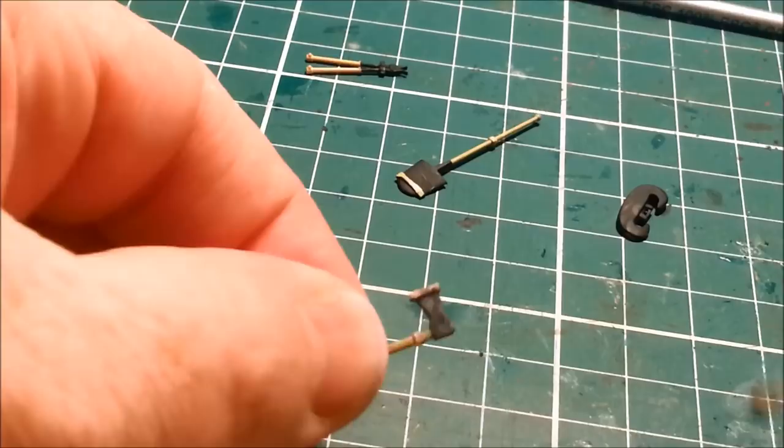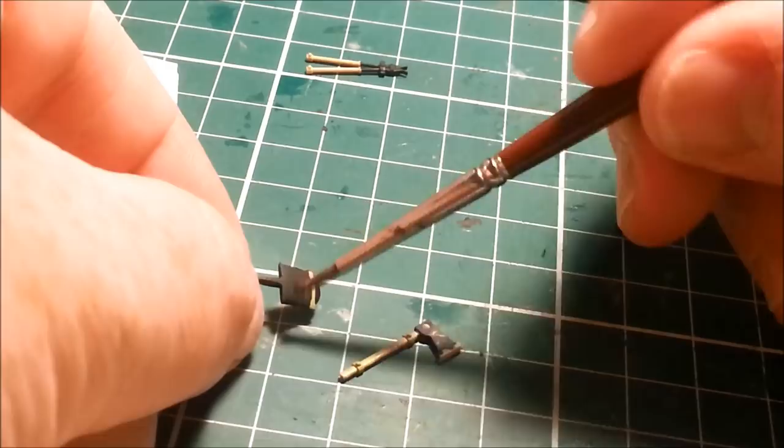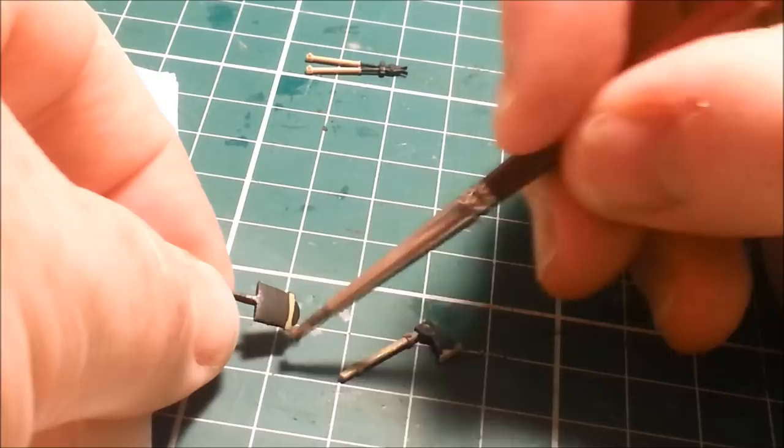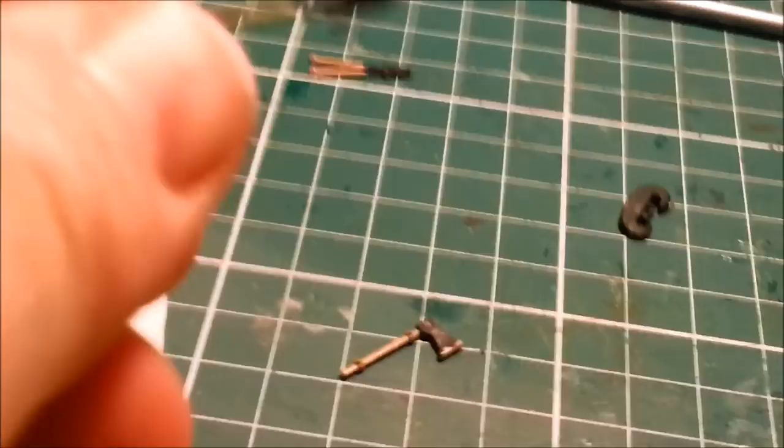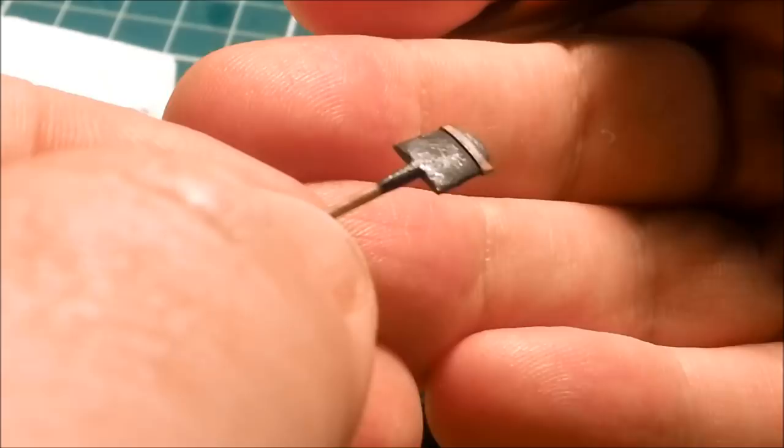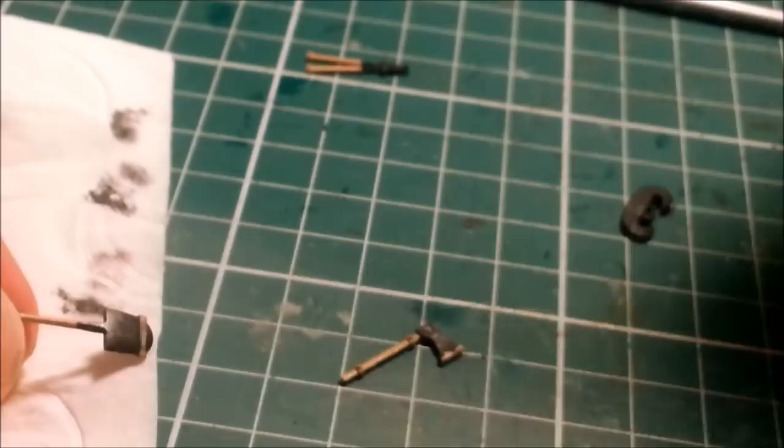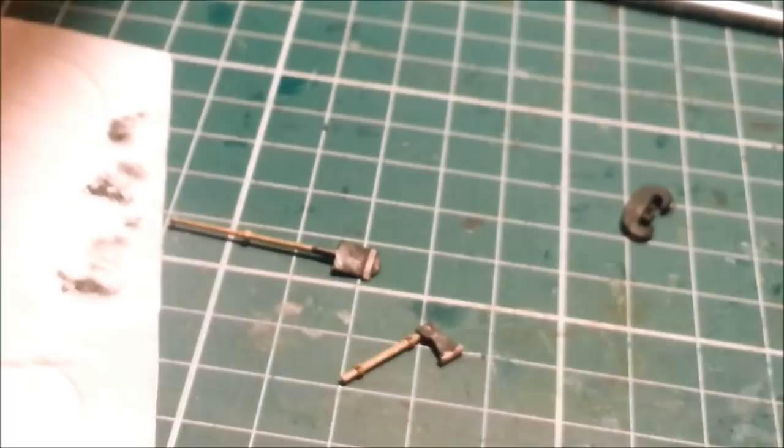That dry brushing will really highlight all the edges. There you go, we've got a nice metallic sheen to that. The shovel is probably the place where it will appear the most. There's your metallic effect. If you wanted it to look fairly factory fresh, you could leave it at that. I'm actually going to do a little bit of weathering on it, just to make them look a little bit older.